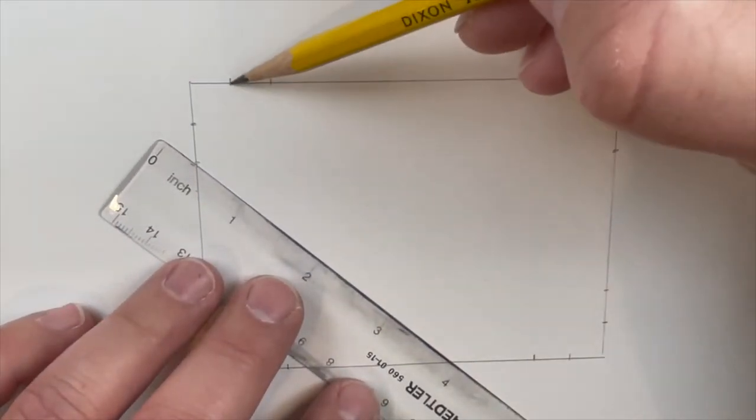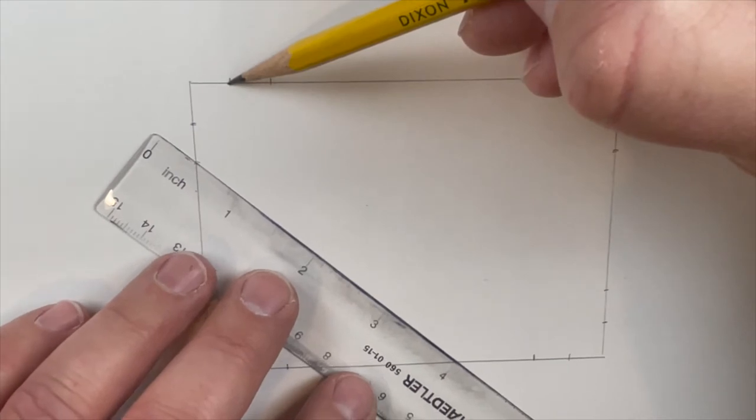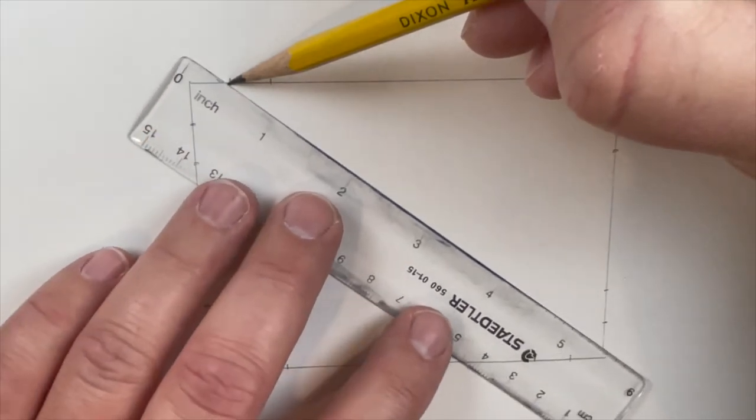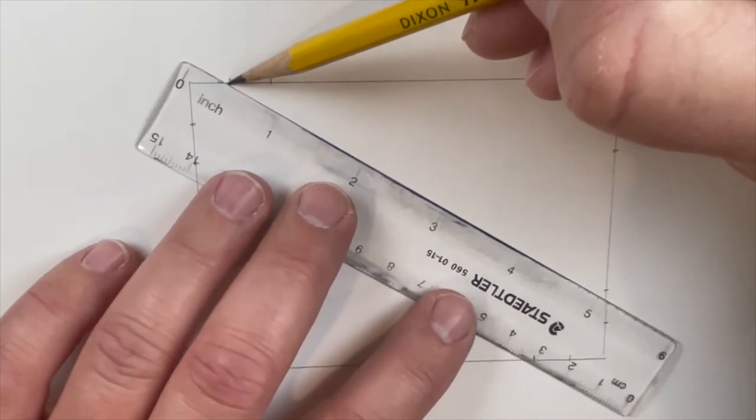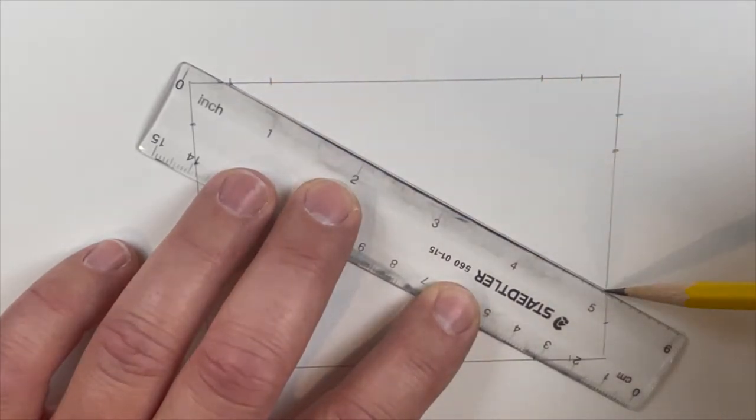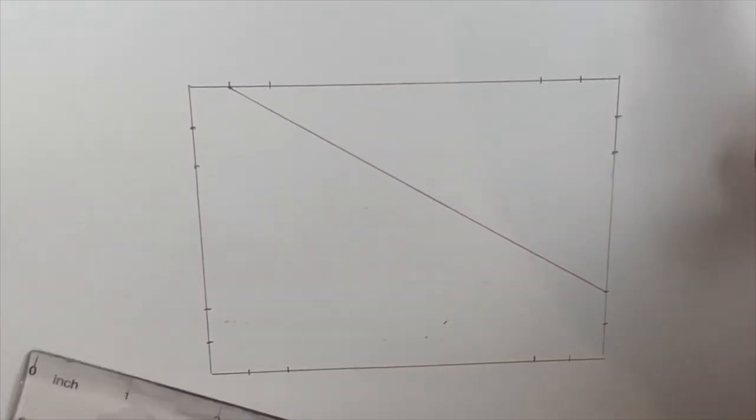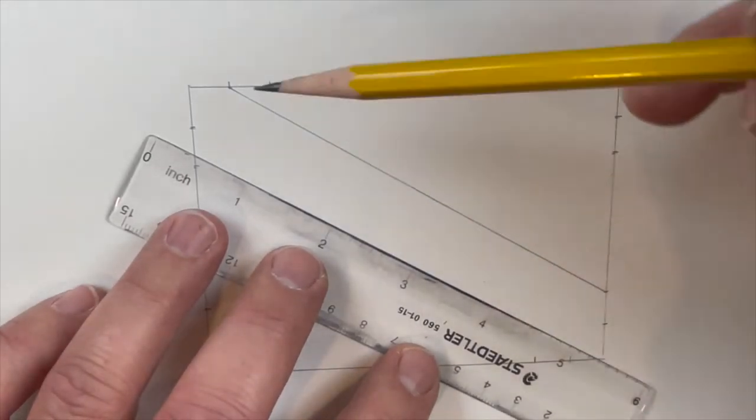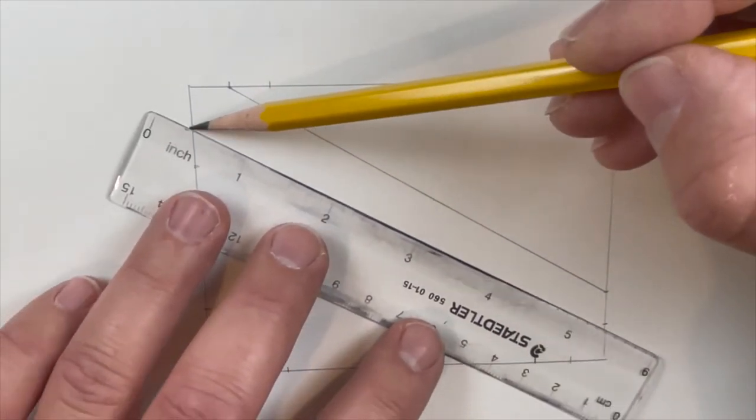Next thing we're going to do is we're going to connect some lines. So go ahead and slow down the video, connect these lines exactly like I'm doing it. So you're going to connect from that top point to this point here. Then you're going to continue on.